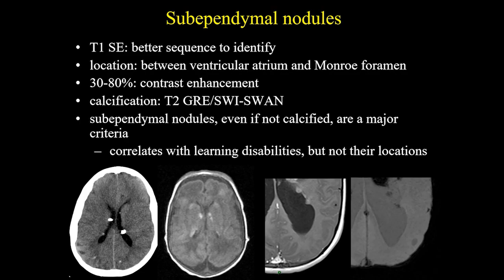ADHD and aggression may be seen in tuberous sclerosis. The best sequence to identify the subependymal nodule is T1. It is mostly located between the ventricular atrium and foramen of Monro. 30 to 80% can show contrast enhancement, and calcification can be best depicted with T2 gradient echo, SWI, and SWAN sequences. If not calcified, the subependymal nodules are a major criteria for the diagnosis of tuberous sclerosis. They are correlated with learning disabilities, but not their location. Here we have some examples showing calcification of the subependymal nodules, best seen on T1 sequence, and also showing some contrast enhancement and calcification on the susceptibility sequence.